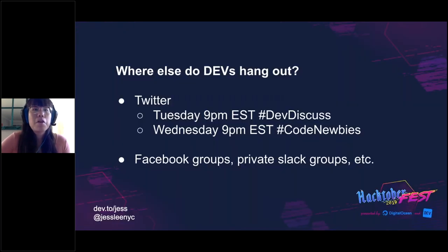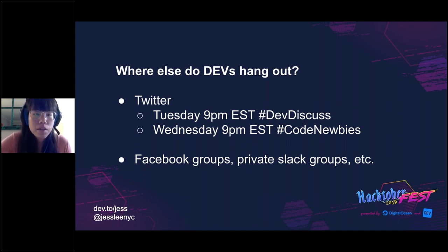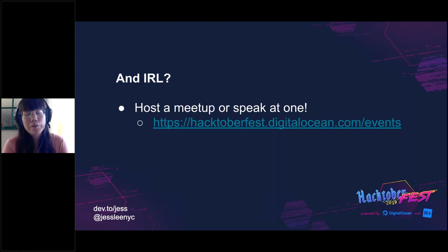Besides Dev, developers are also hanging out on Twitter. We have a Twitter chat at 9pm on Tuesdays and Code Newbies also has one on Wednesdays. There are also lots of Facebook groups and private Slack groups where you can meet other folks from the community, share blog posts you've written, or just talk and engage and meet new people. Since it's Hacktoberfest, I think everyone should also try to make it out to a local Hacktoberfest event — there are over 200 community-run events already listed on the Hacktoberfest website. This is literally the place where people are coming together to contribute to open source, so if you're maintaining a project, this is where you should go to promote it and help people get started.